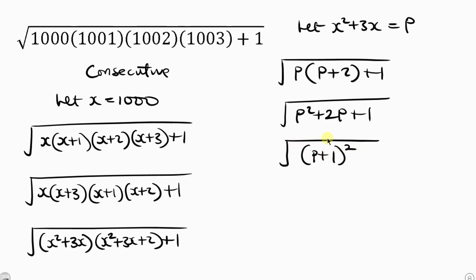Now notice that a square root and a square can cancel out, leaving behind p plus 1. And we said let x squared plus 3x be p. So let's put this expression in place of p this time. So we have x squared plus 3x and then plus 1.